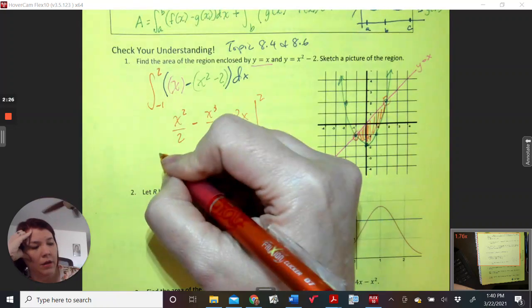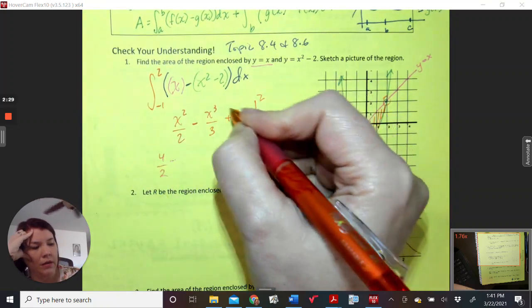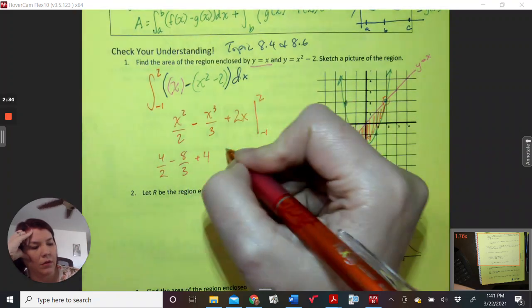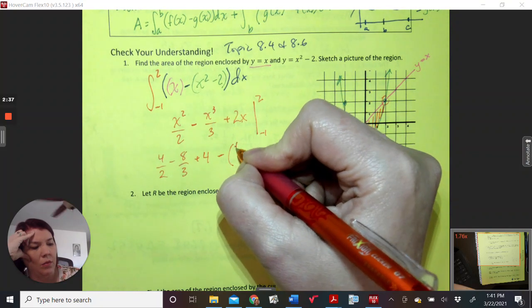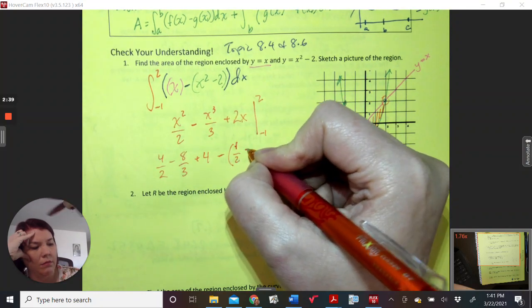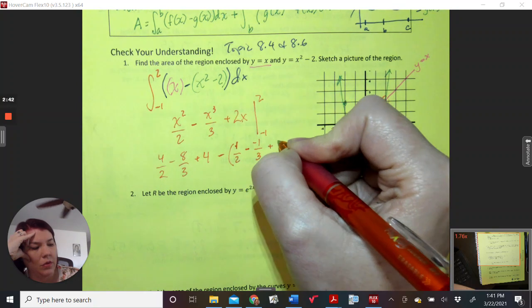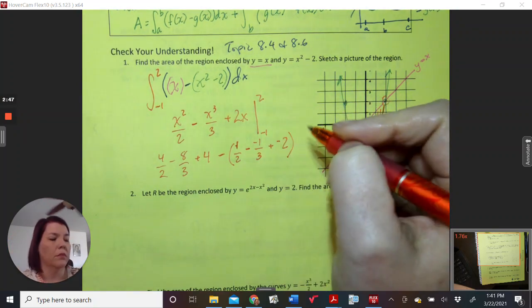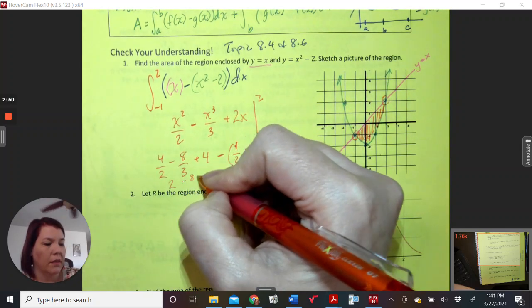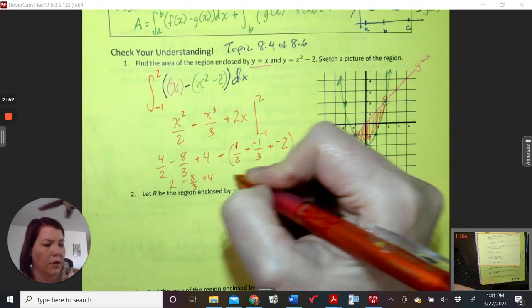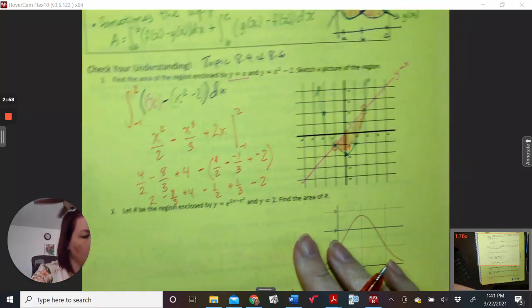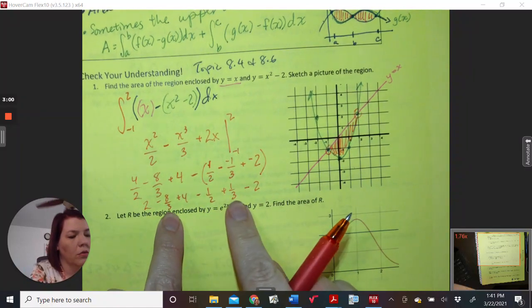So I get 4 over 2 minus 8 over 3 plus 4 minus 1 over 2 minus negative 1 over 3 plus negative 2. So I get 4 over 2, which becomes 2 minus 8 thirds plus 4 minus 1 half plus 1 third minus 2, which is 7 thirds.